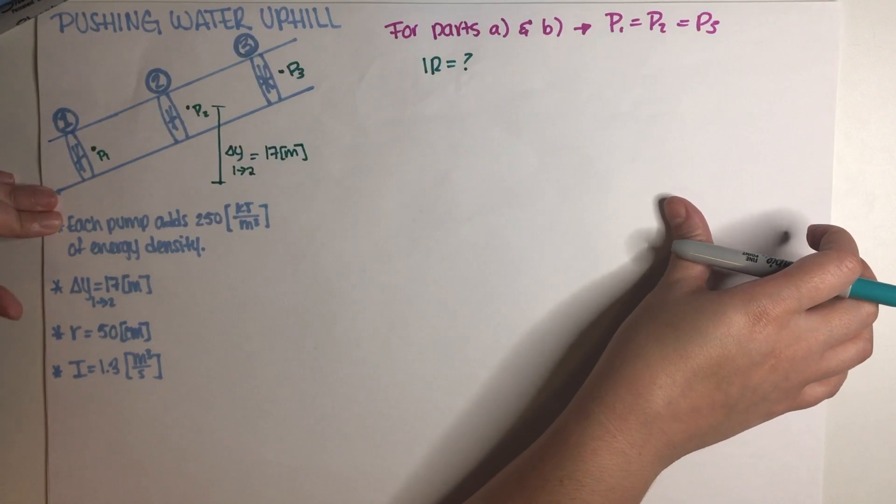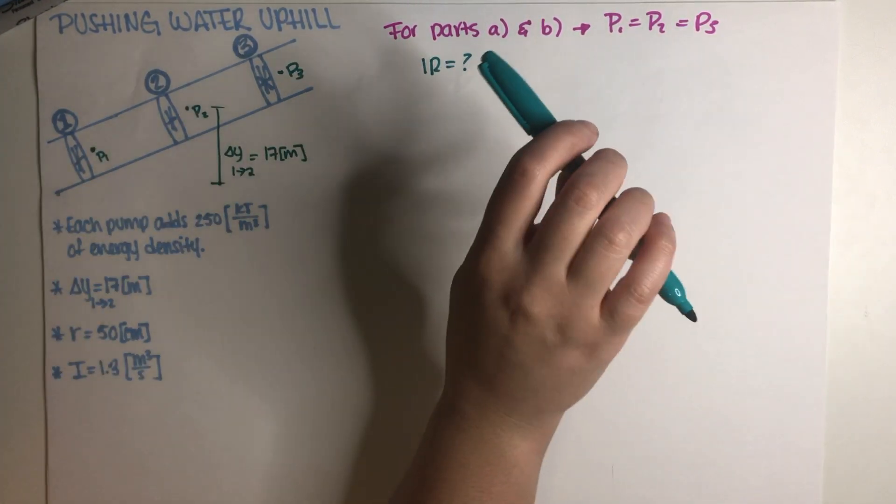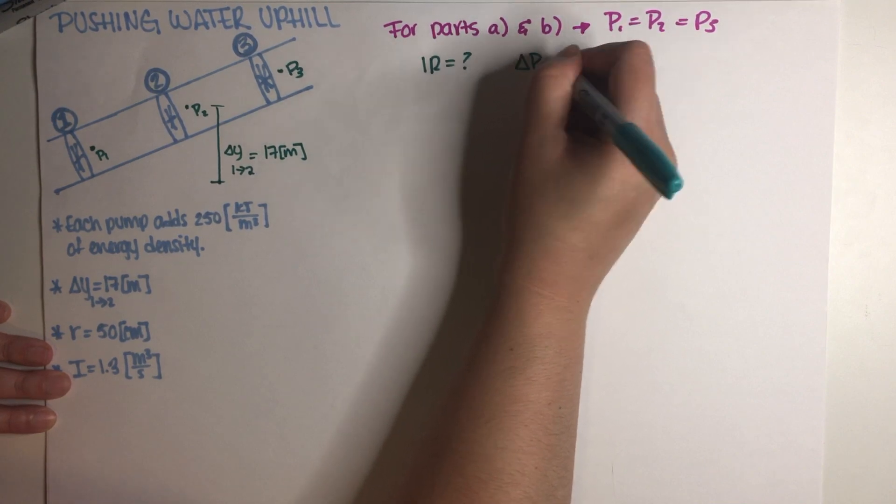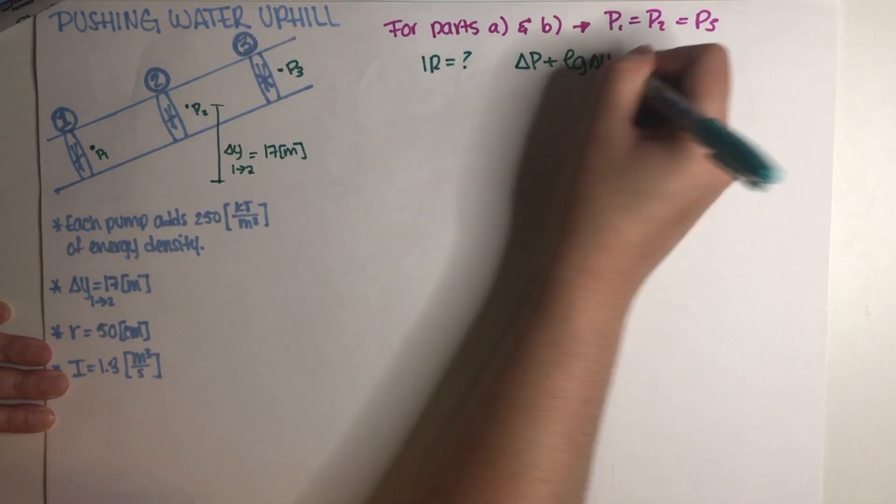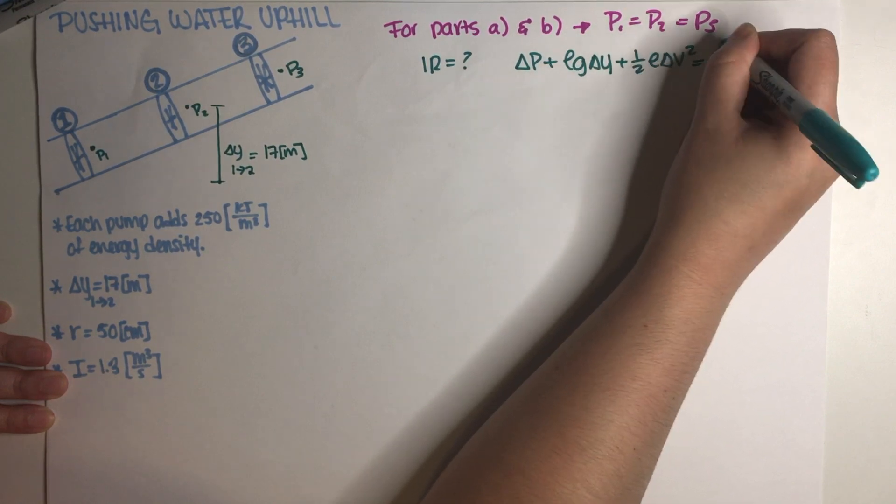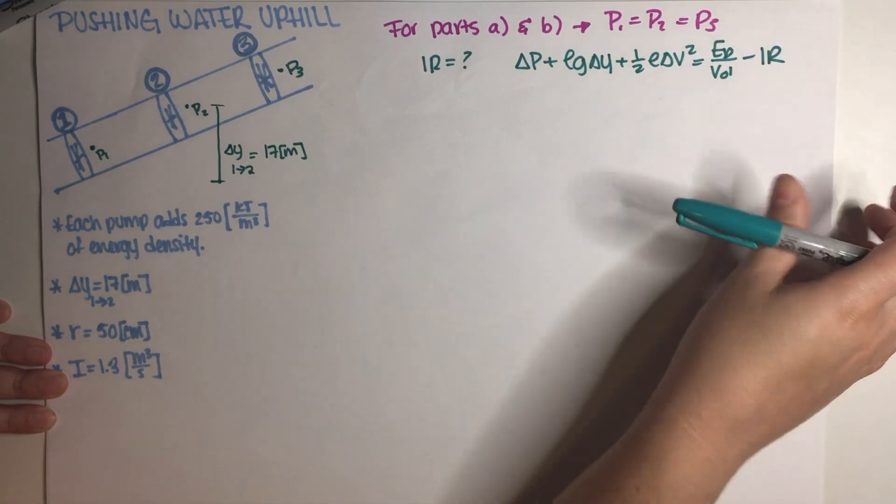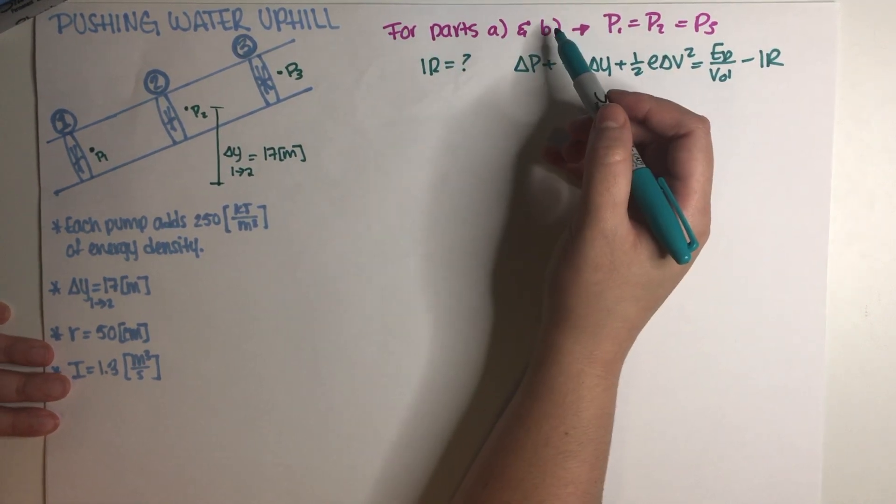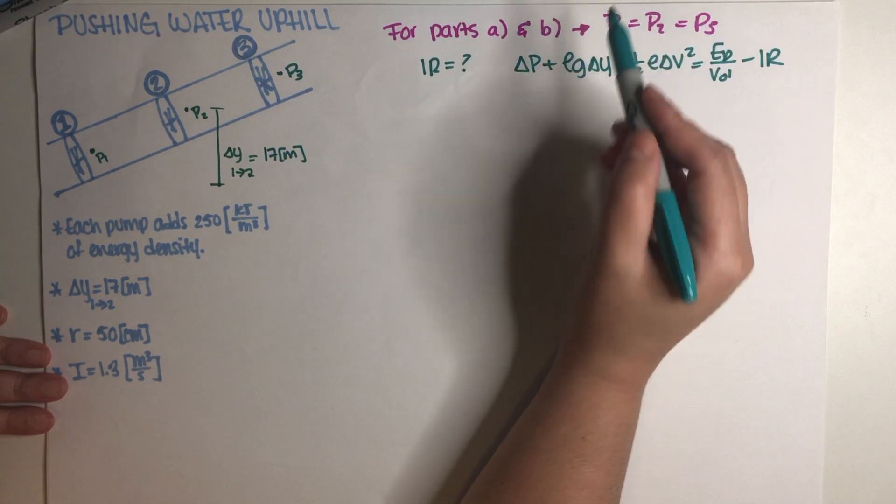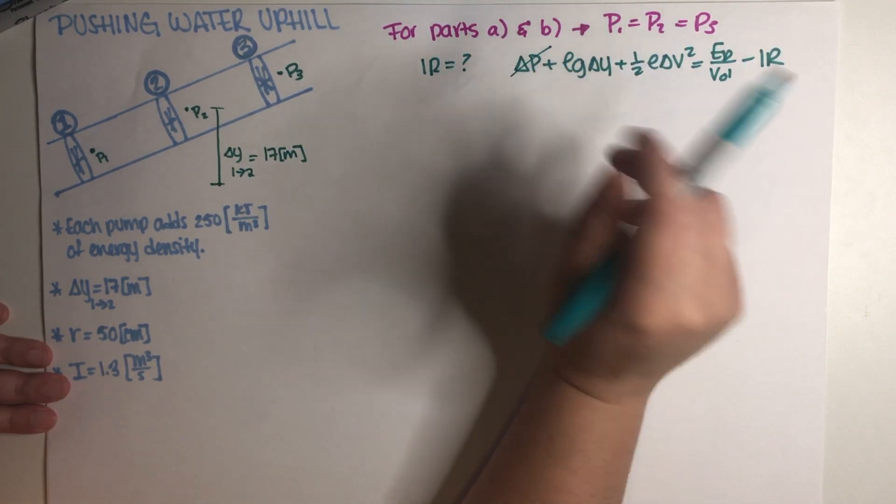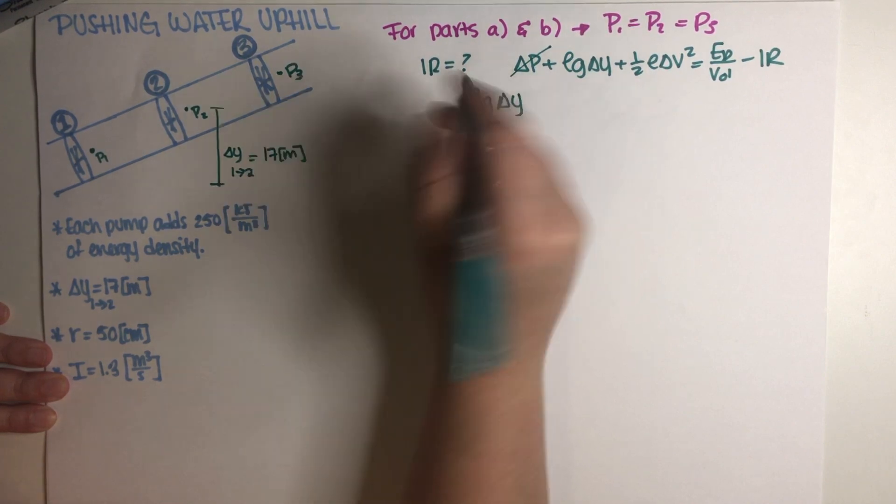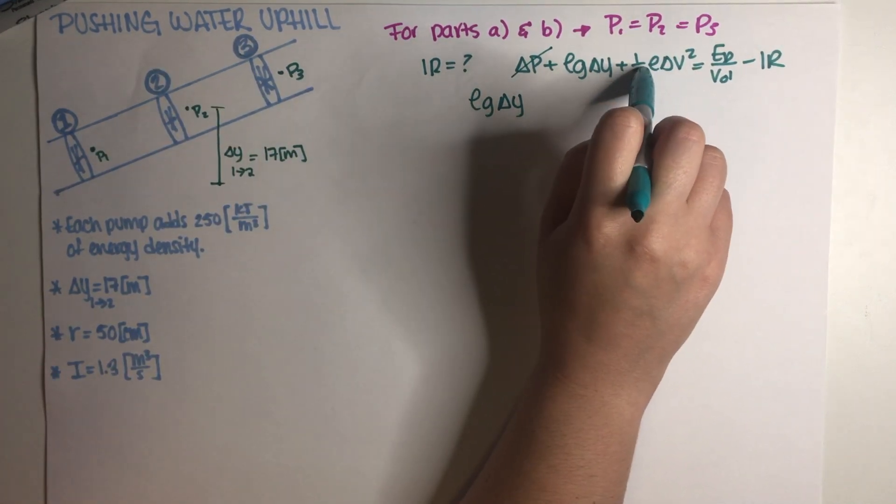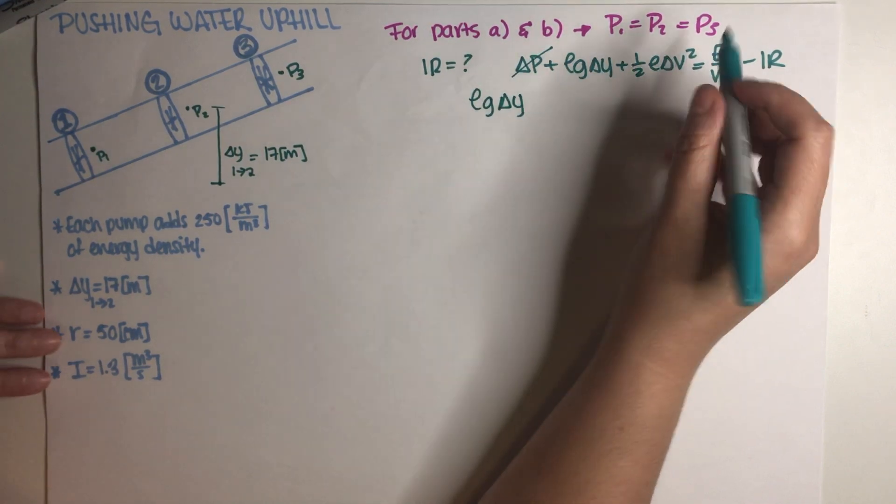Obviously we have to use the Bernoulli equation because that is the only place in which we are going to find out this term. So let's just go ahead and do that. So the entire Bernoulli equation, let me just write it out. Let's see which terms cancel out. Delta P is actually going to cancel out because for parts A and B on this final exam problem, the three pressures are exactly the same. So this is going to go away. This term is not going to cancel out because we do have a change in height going from one to two is equal to 17 meters. This term is going to go away because the area stays the same.